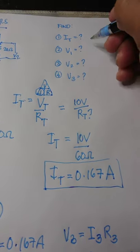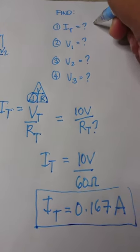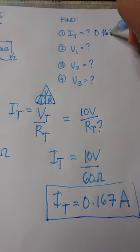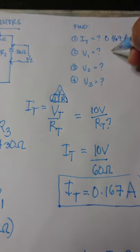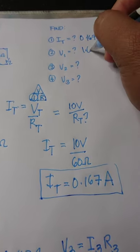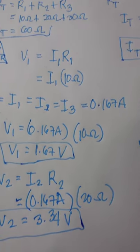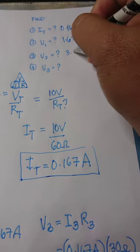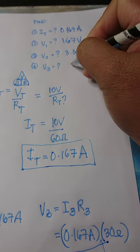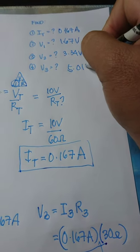Let's write our answer. We found that IT is equal to 0.167 ampere, V1 is 1.67 volts, V2 is 3.34 volts, and we have V3 is 5.01 volts.